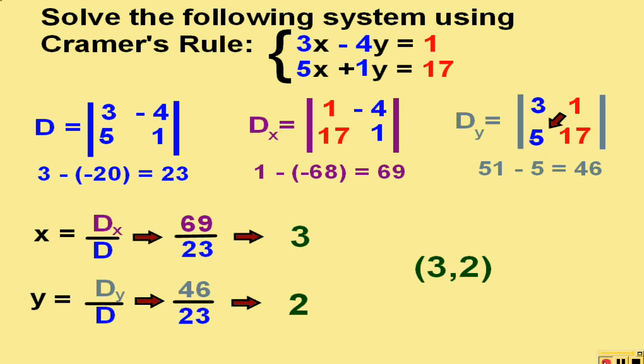So the final answer to this system, using Cramer's rule, is three, comma, two.